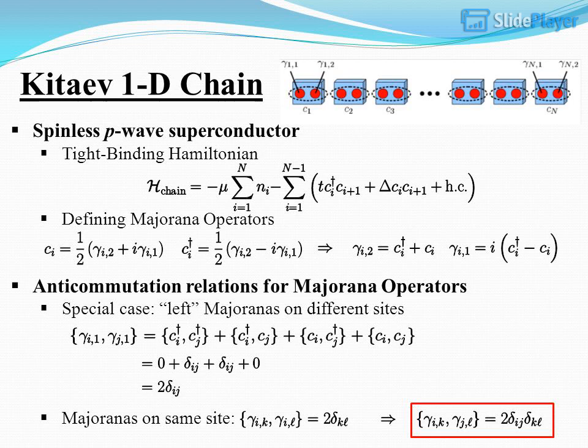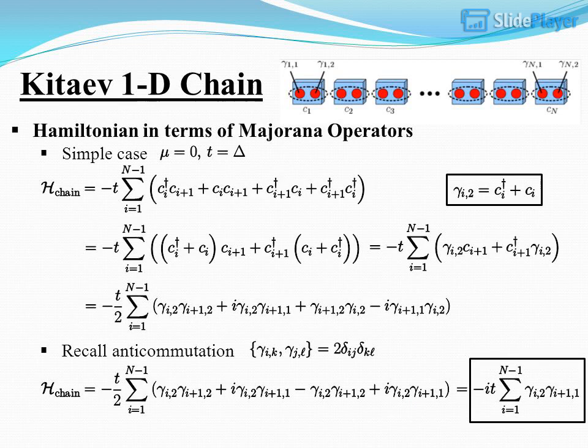Key topic: 1D chain spinless P-wave superconductor. The tight-binding Hamiltonian is introduced, along with the definition of Majorana operators and their anti-commutation relations. Special cases are considered, including Majorana modes on different sites and Majorana modes on the same site. The 1D-chain Hamiltonian is then rewritten in terms of Majorana operators.